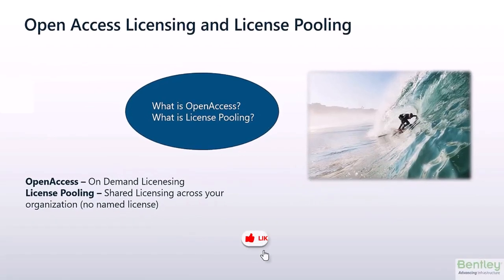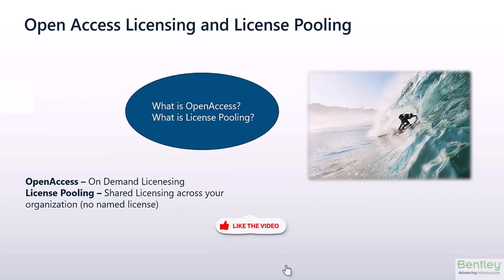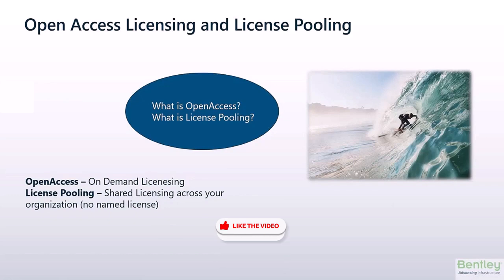With portfolio balancing out of the way, we move on to open access licensing and license pooling. These are on the same slide because they're pretty integrally linked. Open access licensing is essentially the vehicle that allows you to access licensing, while license pooling is something that runs hand-in-hand with it.